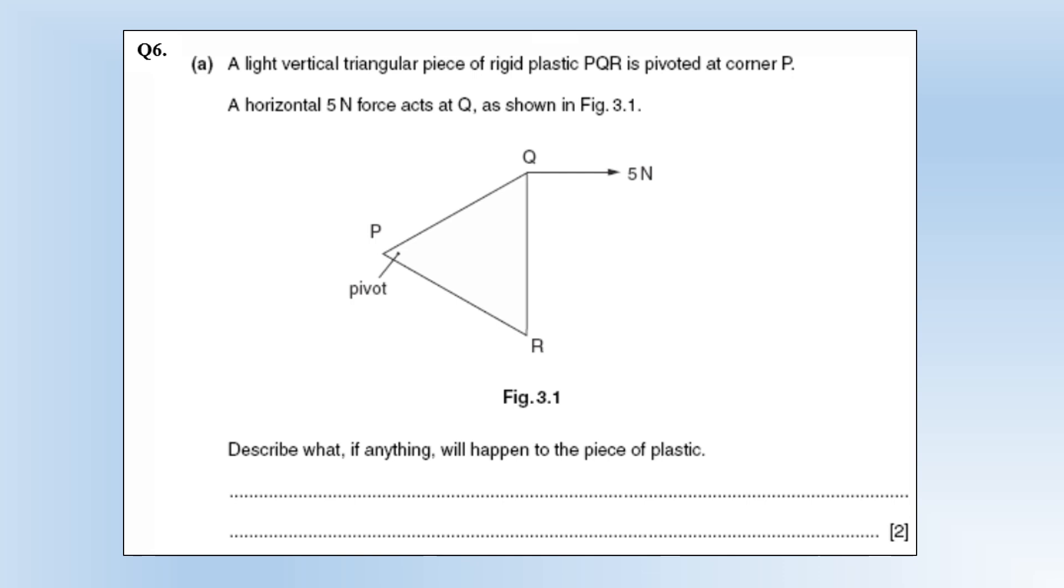A light vertical triangular piece of rigid plastic is pivoted at corner P. A horizontal five newton force acts at Q. Describe what, if anything, will happen to the piece of plastic. It's going to rotate clockwise about the pivot because that five newton force is going to have a moment about the pivot. Therefore it's going to make the object rotate, and as it's the only force, the object is going to rotate in the direction of that force or the moment.